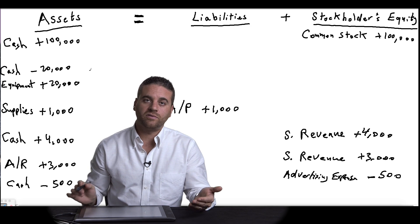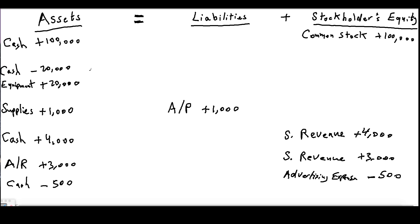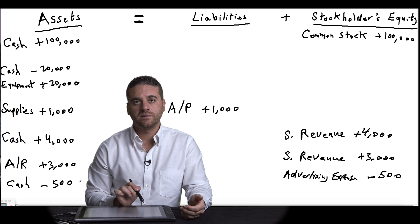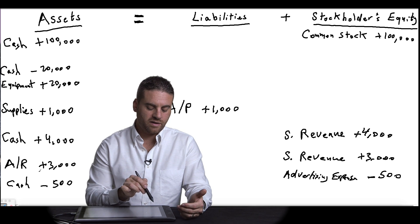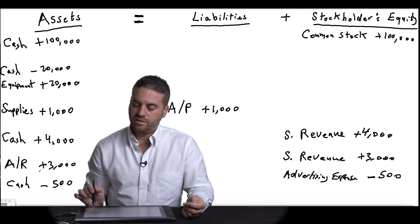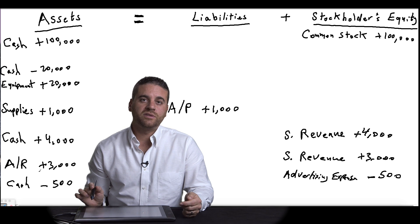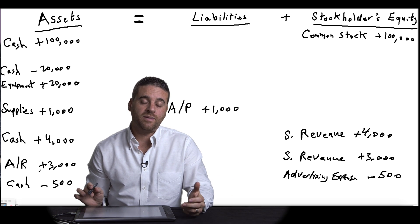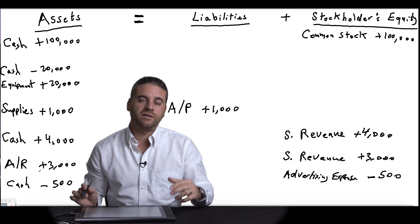The ending balance is the result of all the pluses and minuses for all those accounts. For example, going back to cash: we increased it by $100,000, decreased it by $20,000, increased it by $4,000, then decreased it by $500. So: $100,000 minus $20,000 equals $80,000; plus $4,000 equals $84,000; minus $500 gives an ending balance of $83,500. You do the same for equipment, supplies, accounts receivable, accounts payable, and every account used during the period. What we'll talk about next — in the next video — is how to deal with those ending balances and what the next step is after calculating them.